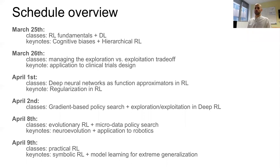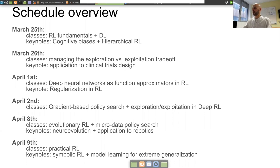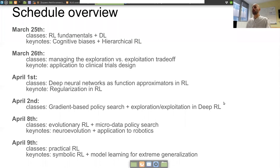The fourth day, April 2nd, the main class is given by Olivier Sigaud, professor at Sorbonne University, talking mainly about policy search, gradient-based policy search, and actor-critic methods. The second class of the day will be given by Matteo Pirotta, researcher at Facebook AI Research, about the connection between function approximation and exploration-exploitation in deep reinforcement learning. We had to wait until this fourth day of the summer school to have consistency on this talk as well.